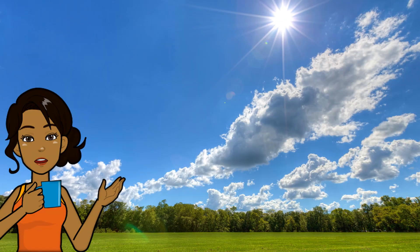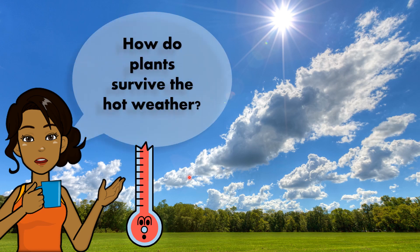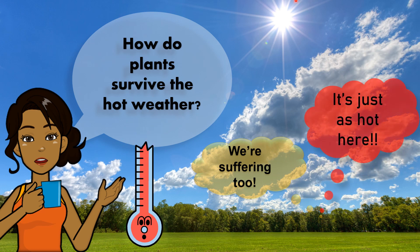Have you noticed how hot the weather is these days? Lucky for us, we have mechanisms that help to regulate our body temperature so that our temperature remains at 36.9 degrees Celsius. But what about plants? They are exposed to extreme sunlight. How do they handle an increase in temperature? Let's find out.